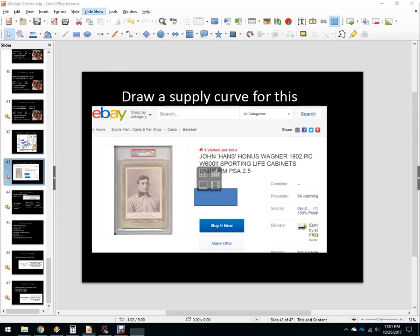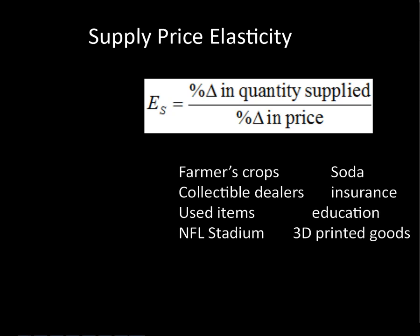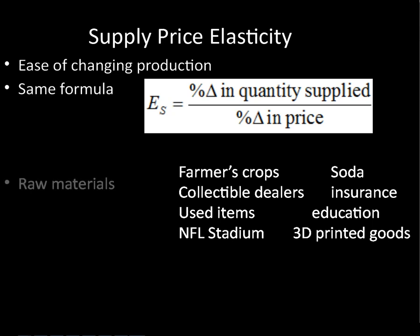The formula for price elasticity of supply is basically the same as for demand, except the numerator uses percent change in quantity supplied rather than quantity demanded, and the denominator is the percent change in price. This measures how easy it is to change production. If the number is over one, it's pretty easy to change production. If it's less than one, it's relatively harder — like the Honus Wagner card.